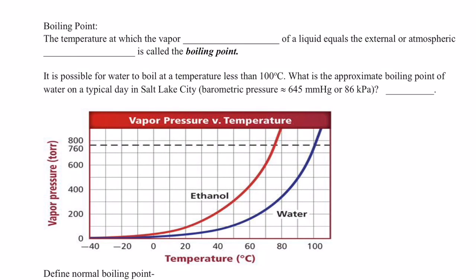Now let's talk about boiling point, because boiling point is also determined by the strength of intermolecular forces of attraction. The technical definition: boiling point is the temperature at which the vapor pressure — remember vapor pressure from the beginning of this unit — of a liquid equals the external or atmospheric pressure. That temperature is called the boiling point.